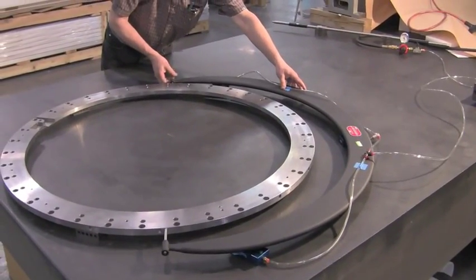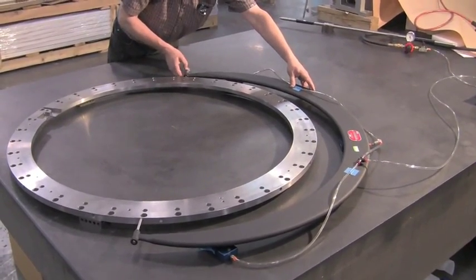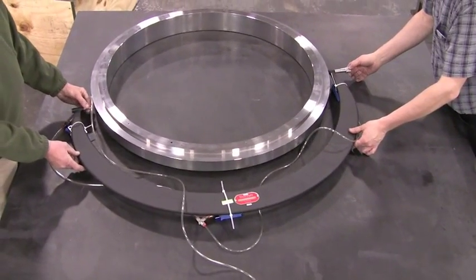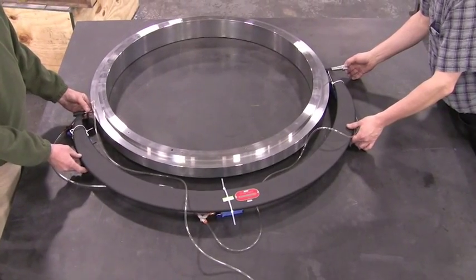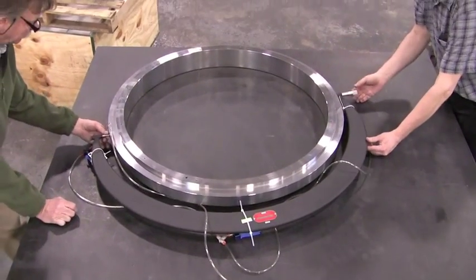You can see how easy the air bearings make maneuvering that large micrometer. You can see how the air bearings keep the micrometer parallel to the granite surface plate and in the same position.